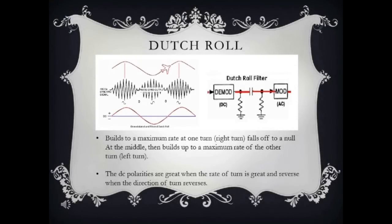The picture at the left is an image of Dutch roll. Since the rate of turn is constantly changing, the output of the rate gyro is constantly changing. That's why we have a wavy output. The 400Hz signal begins at the left with no output because there is no rate of turn. Then it builds to a maximum rate at one turn, then falls off to a null at the middle. Then builds up to a maximum rate of the other turn. To keep it simple, the DC polarities are great when the rate of turn is great and reverse when the direction of the turn reverses.